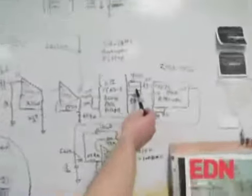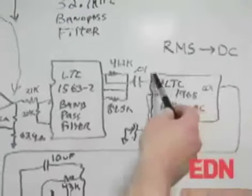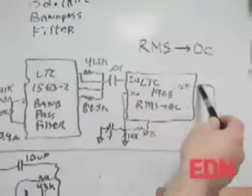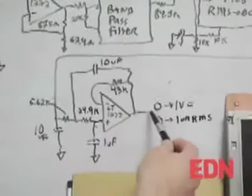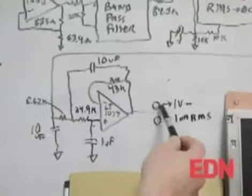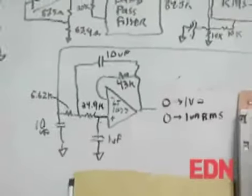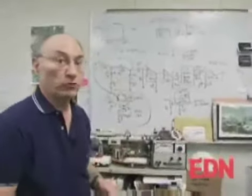Once we come out of the bandpass filter, we run into an RMS to DC converter to get the RMS value of the signal. That drops out of this last amplifier with a scale factor of 0 to 1 volt equals 0 to 1 microamp RMS. We're shooting for an overall accuracy of 3 or 4% in the measurement.